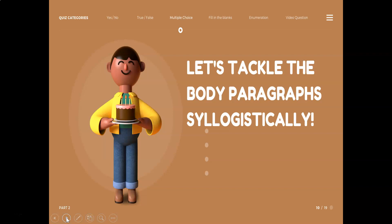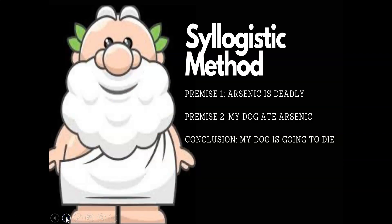For body paragraphs, we argue syllogistically — premise, premise, conclusion — from the Aristotelian tradition. For example: premise one, arsenic is deadly; premise two, my dog ate arsenic; therefore your dog is going to die. Students write that line of reasoning cogently in their body paragraphs. They're shooting for 10 sentences to ensure sufficient textual support and analysis, with a hard cap at 12.